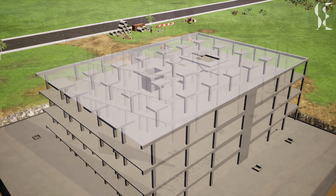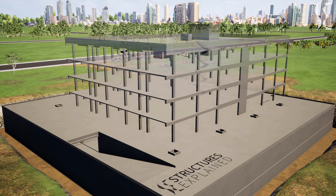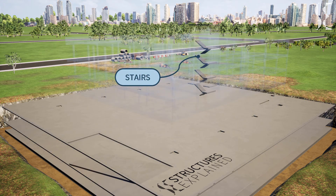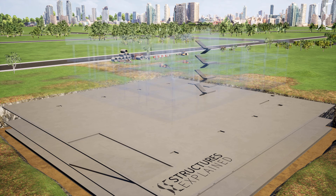Last but not least come stairs, which can be cast at site or come in precast panels. They can be of various types such as L-shaped, U-shaped, spiraled, or curved as per requirements. The stairs can be enclosed in a core wall or rest on columns and beams as per design. Openings are also an important part of structural components, as openings break the load path and extra care has to be taken regarding the size of openings and reinforcement around them. Openings are mainly governed by architectural or MEP requirements.